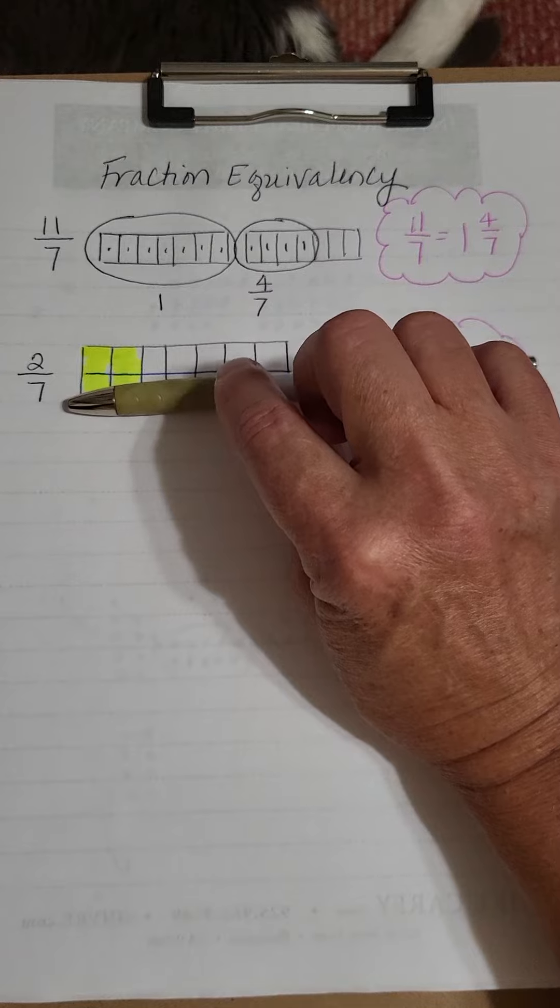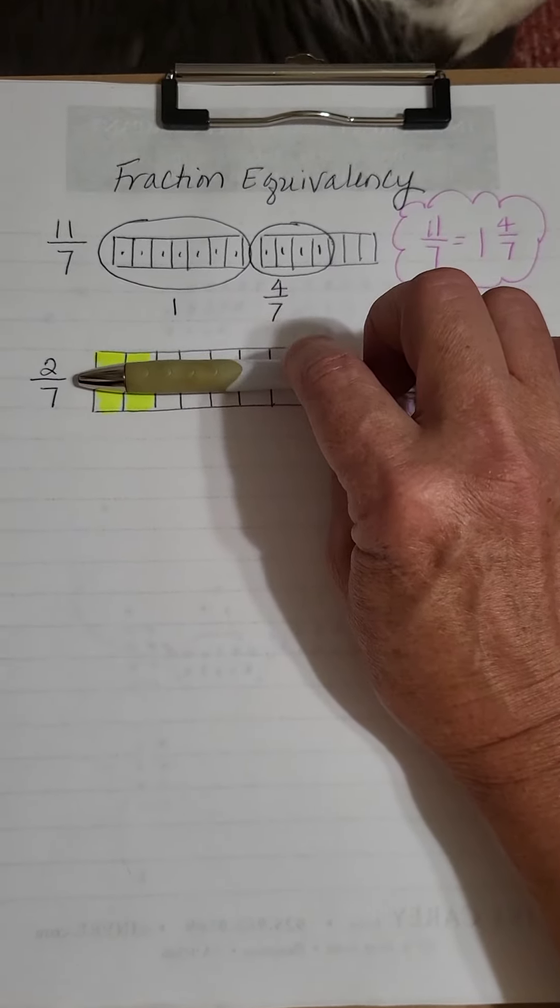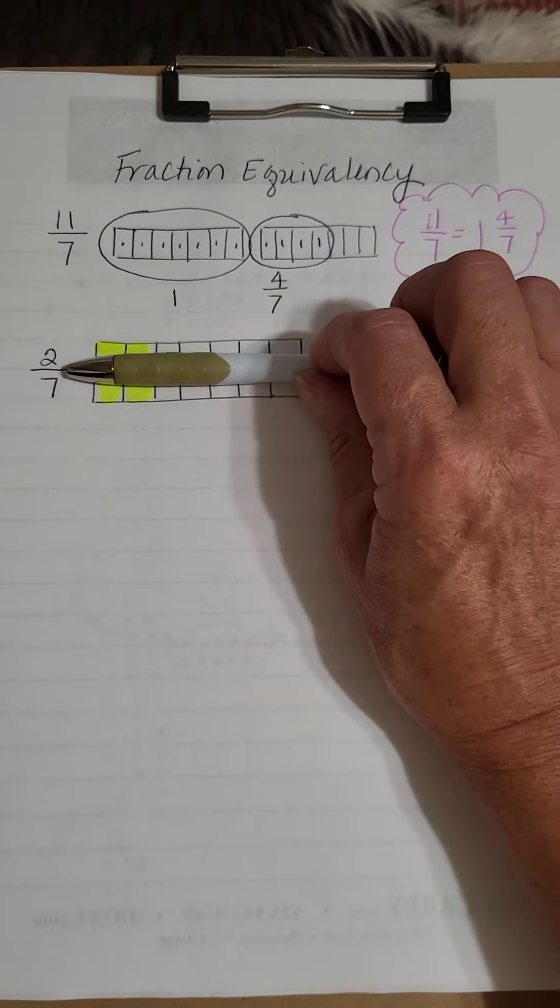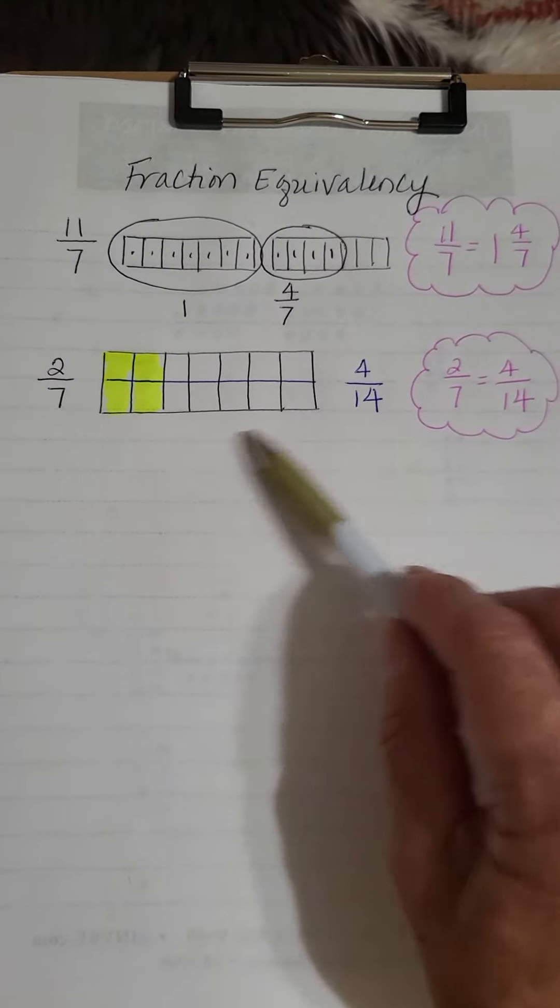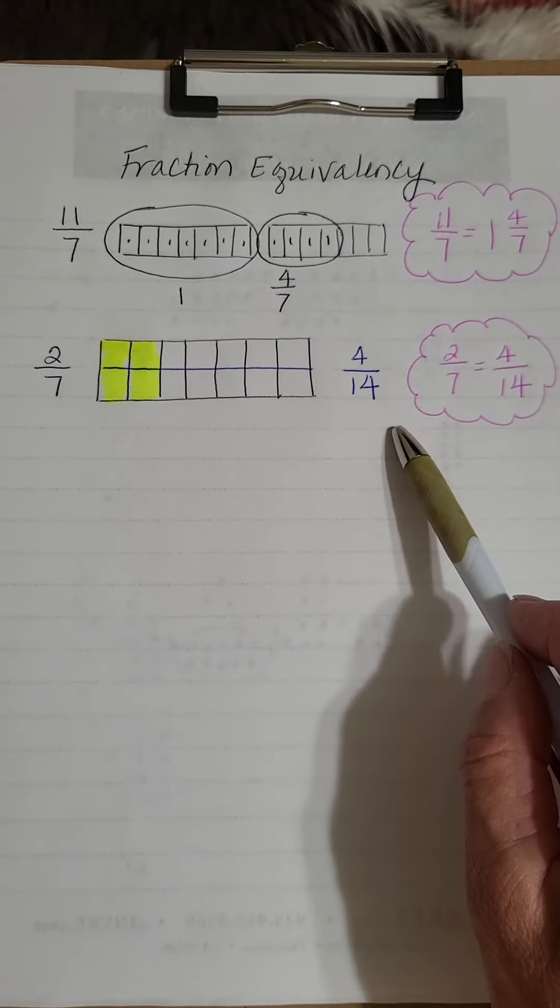1, 2, 3, 4, 5, 6, 7 with no line down the center, and I shaded or highlighted two of them out of the seven. Then I cut them in half, and I ended up with four pieces out of 14,